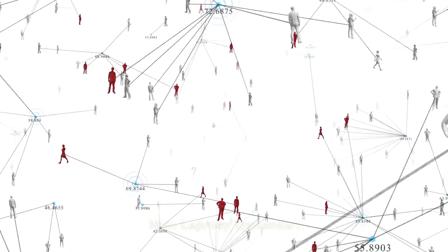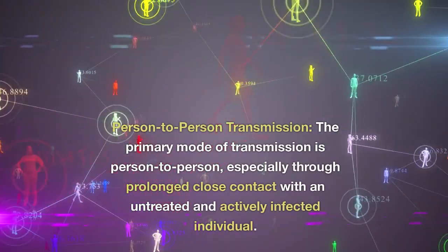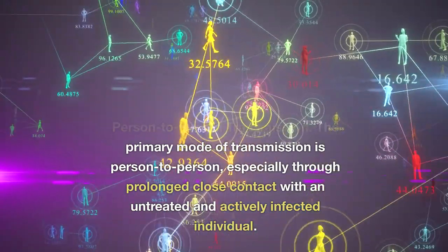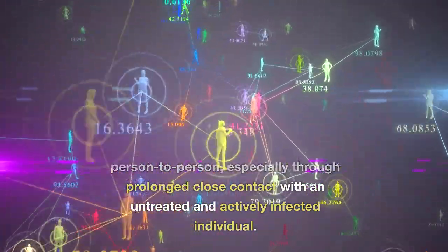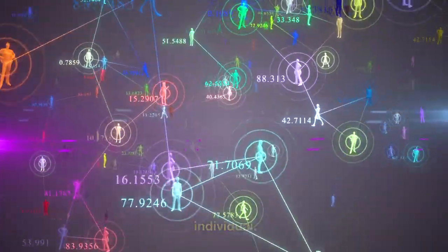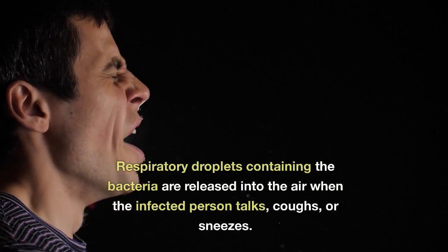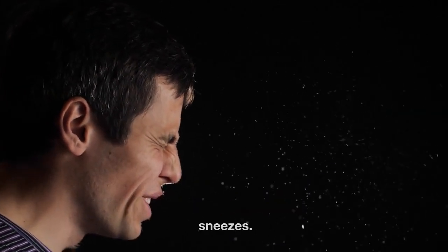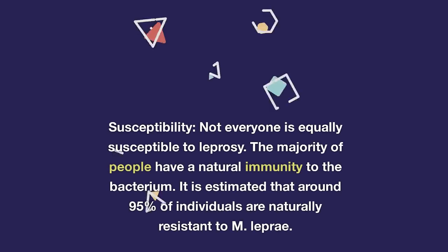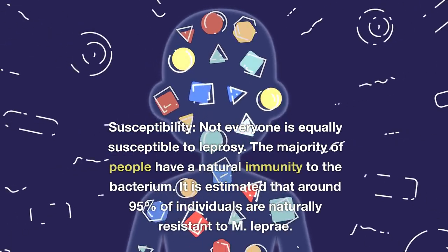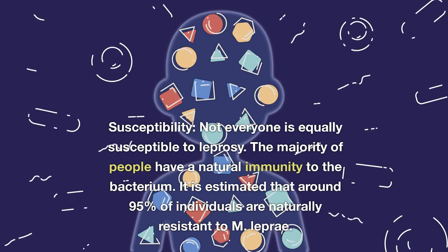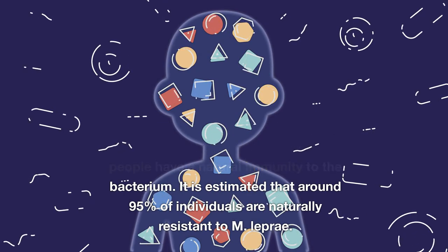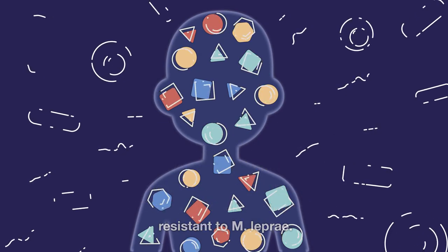How Leprosy Transmits — Person-to-Person Transmission. The primary mode of transmission is person-to-person, especially through prolonged close contact with an untreated and actively infected individual. Respiratory droplets containing the bacteria are released into the air when the infected person talks, coughs, or sneezes. Susceptibility. Not everyone is equally susceptible to leprosy. The majority of people have a natural immunity to the bacterium — it is estimated that around 95% of individuals are naturally resistant to M. leprae.